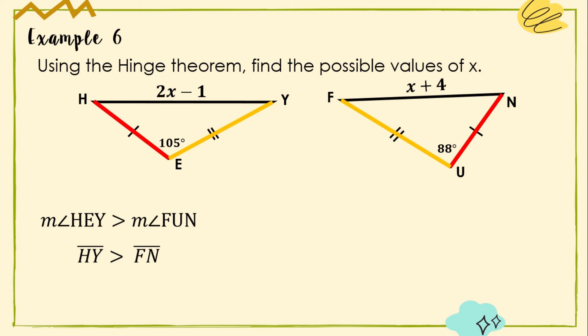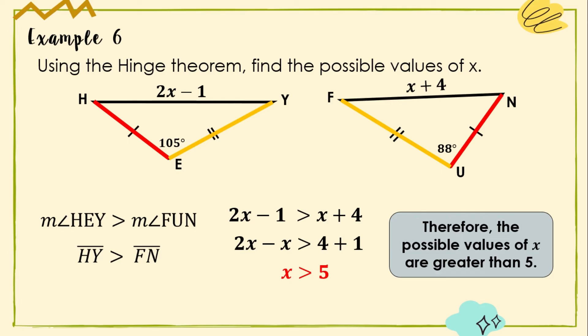Side HY is given by 2X − 1 and side FN is given by X + 4. Setting up the inequality: 2X − 1 > X + 4. Adding 1 and subtracting X from both sides: X > 5. Therefore, the possible values of X are greater than 5.